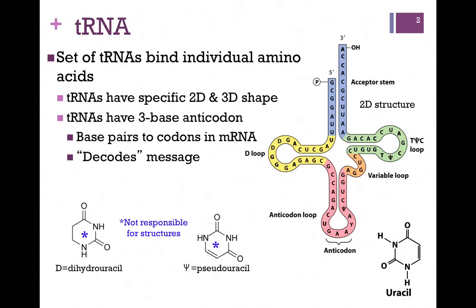You can see it's one RNA molecule. We have the five-prime phosphate end here, the full length of the molecule, and here's our three-prime OH. There are regions of intramolecular base pairing, and that forms distinct regions within the molecule.